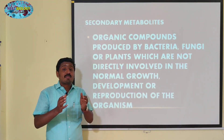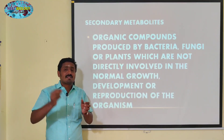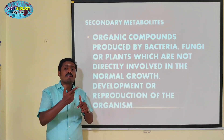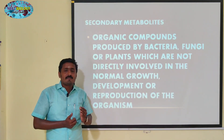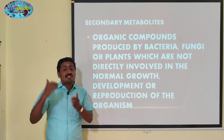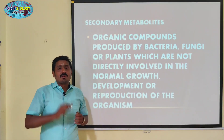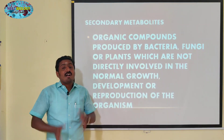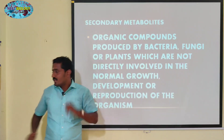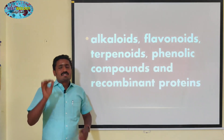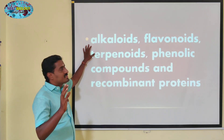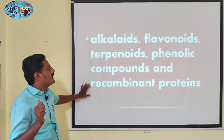So, secondary metabolites — what are we going to do? The plant produces certain substances. For example, the jasmine plant produces substances used in jasmine plant tissue culture using liquid medium. Every plant produces secondary metabolites. The kinds of substances produced include alkaloids, flavonoids, terpenoids, phenolic compounds, and recombinant proteins.